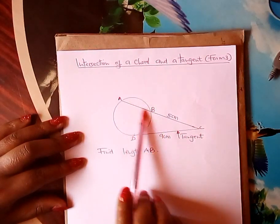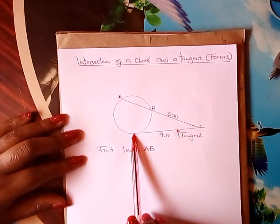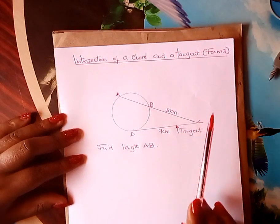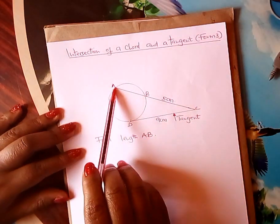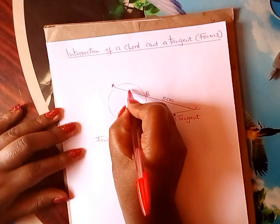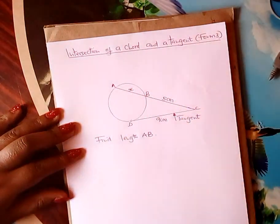This is a chord AB which is produced to meet with a tangent BC. You are now taught to find the length of AB. What is length AB? Let us call it X.